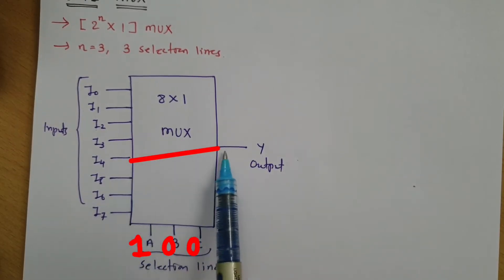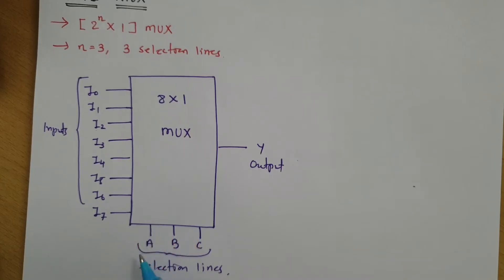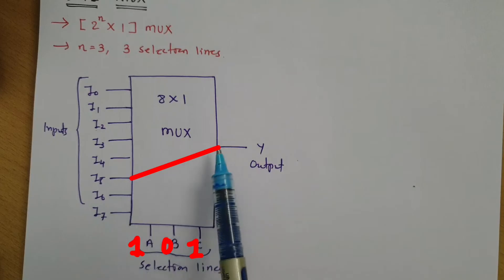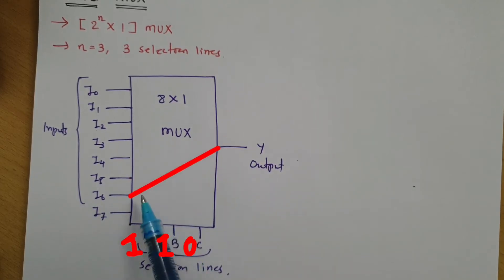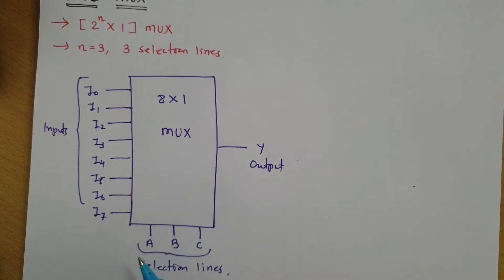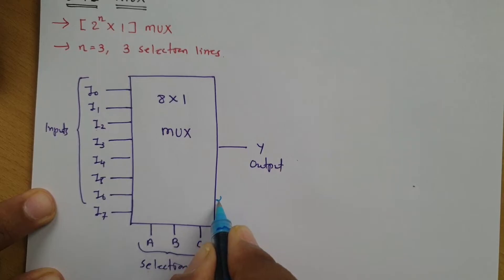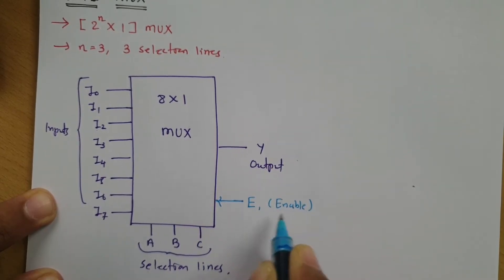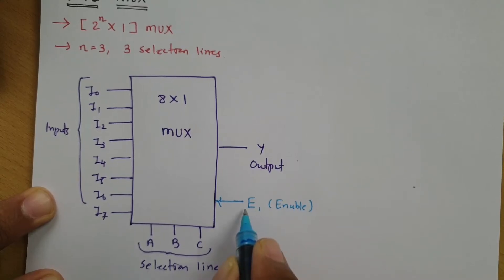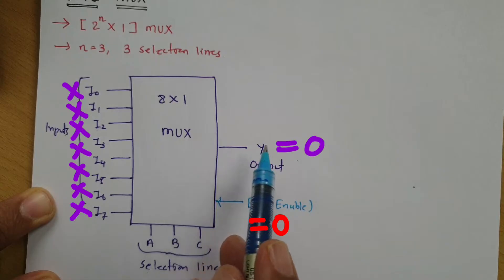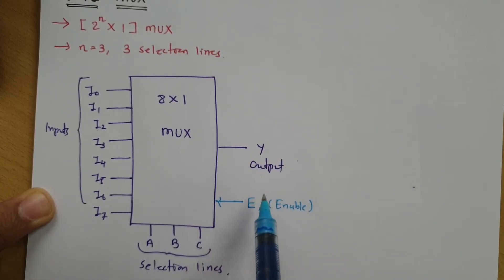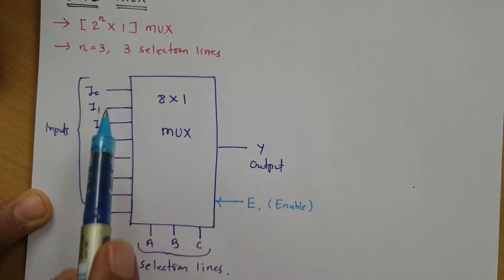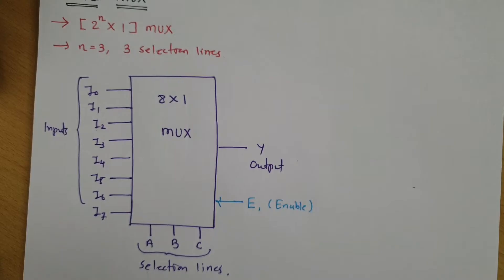When A, B, C is 1, 0, 0, then I4 gets transferred to output Y. When it is 1, 0, 1, then I5 is transferred. When A, B, C is 1, 1, 0, then I6 is transferred to output Y. When A, B, C is 1, 1, 1, then I7 gets transferred to output Y. One important terminal we should not forget is terminal E, the enable terminal. When E is 0, no matter what the inputs are, the output stays zero.